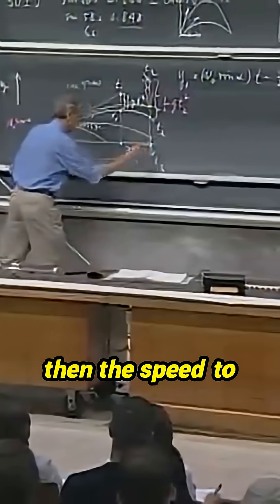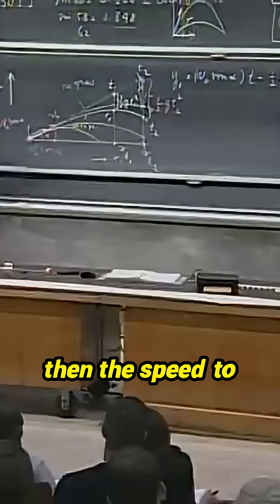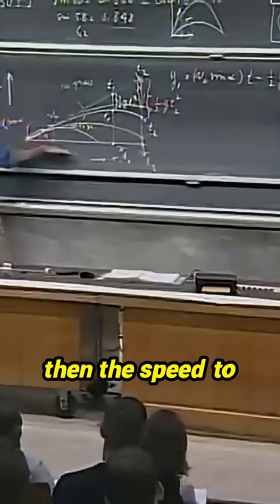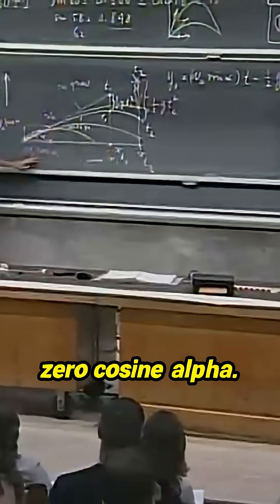If this distance is d, then the speed to reach this point is v zero cosine alpha.